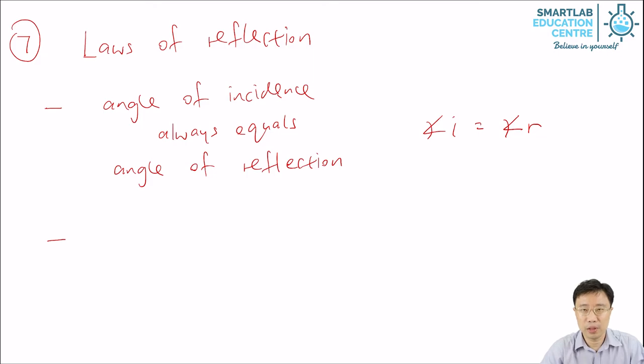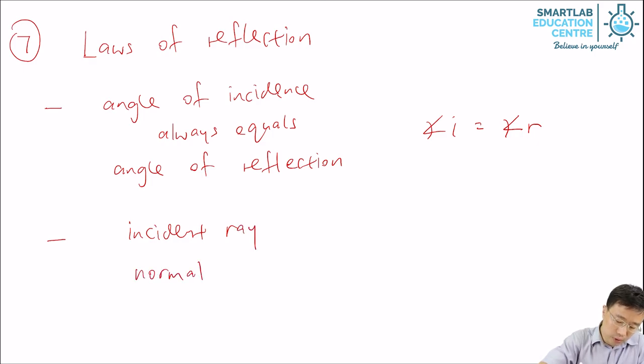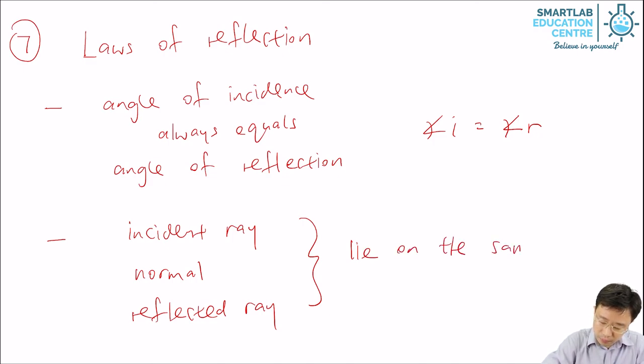There is a second law of reflection that is not often tested, but which you should still know. The second law says that the incident ray, the normal, and the reflected ray all lie on the same plane. What is a plane? A plane is just a flat horizontal surface. Here, the plane can be imaginary or it can be real.